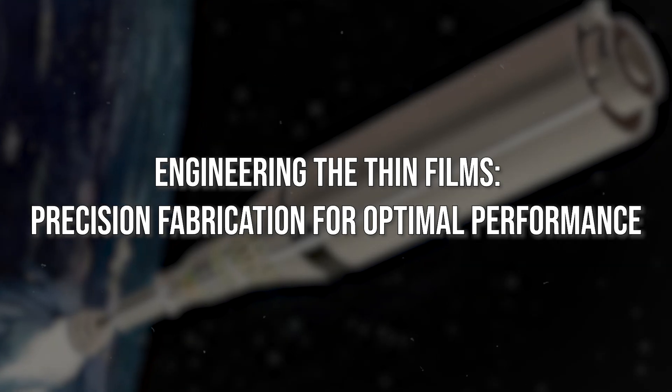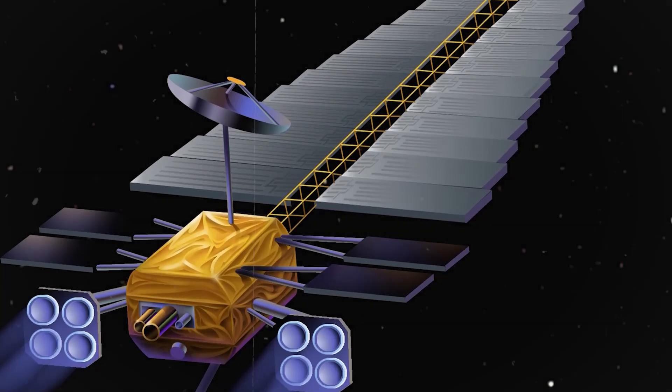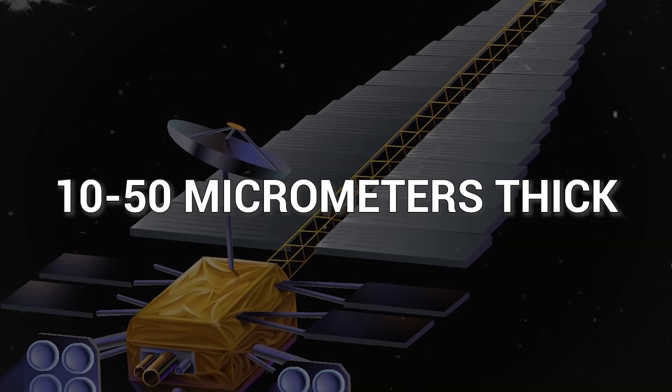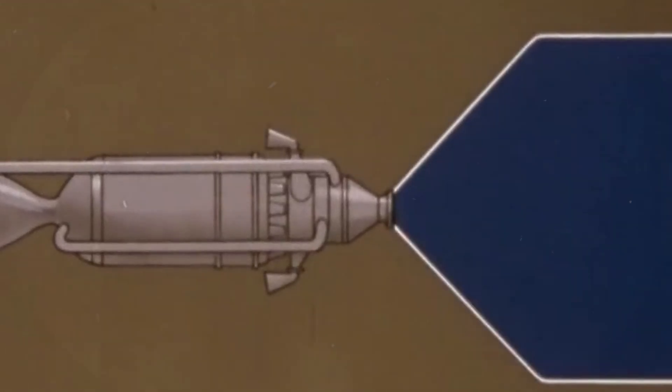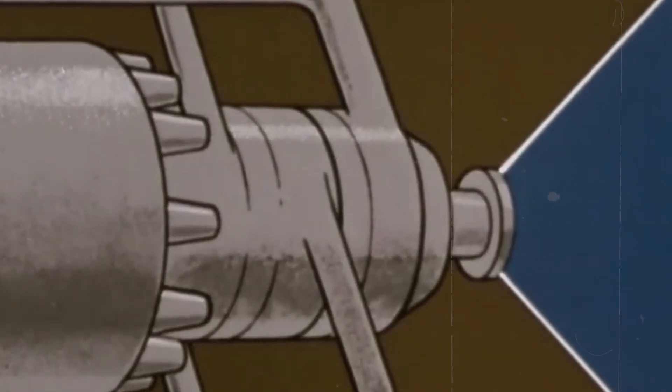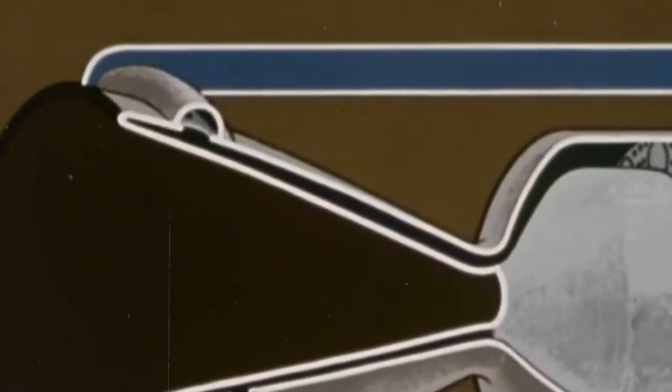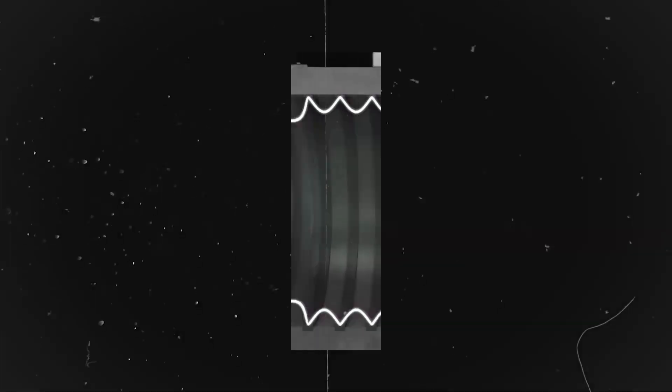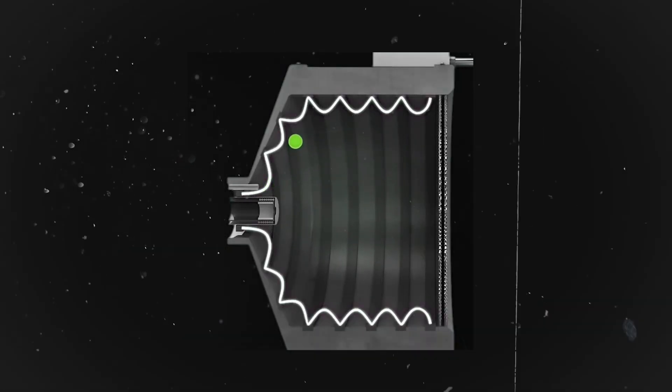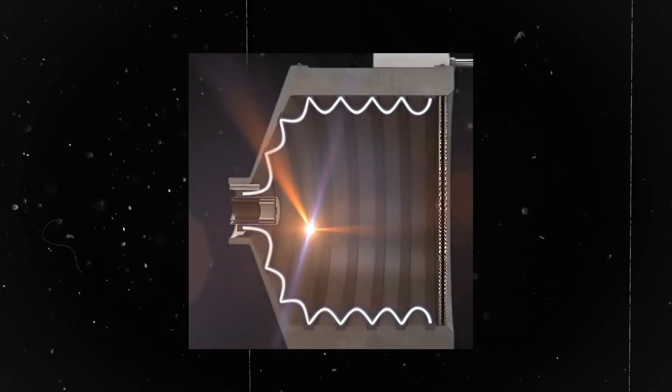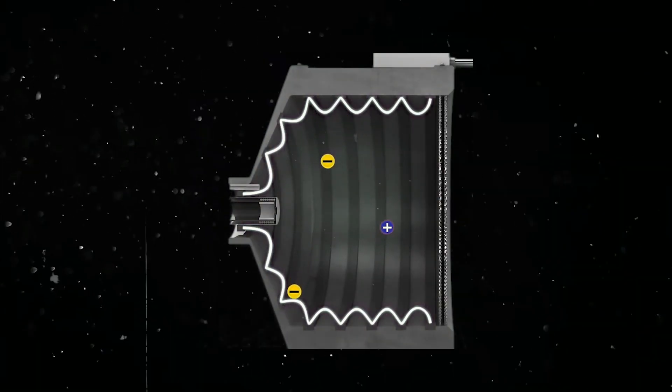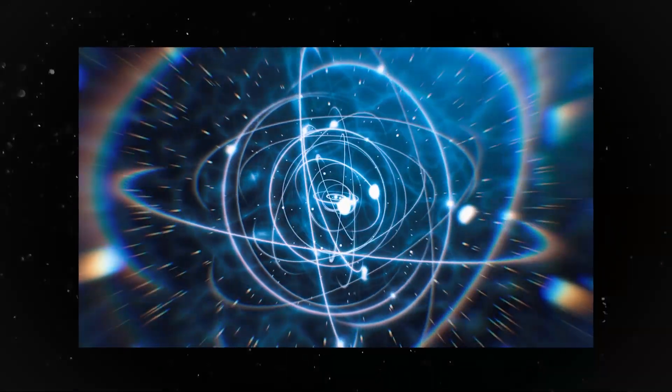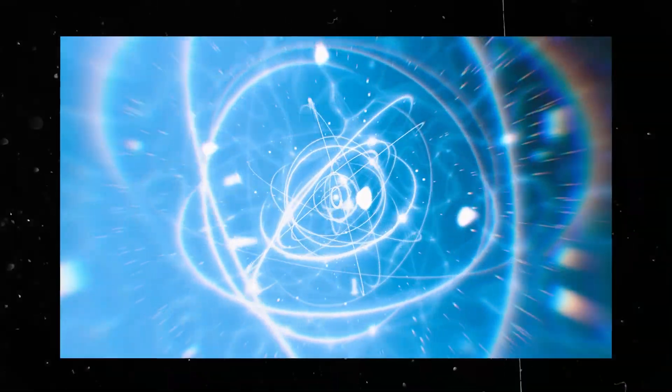Engineering the thin films: precision fabrication for optimal performance. The thin in T-Finer is not an exaggeration. Each fuel layer is only 10 to 50 micrometers thick, or about the width of a human hair. These films are precisely produced utilizing processes such as physical vapor deposition to ensure the radioisotope's uniform distribution. The thickness is critical for balancing efficient alpha particle emission and structural stability. Coating one side of the film with a specialized absorber material plays a vital role. This layer selectively captures and redirects alpha particles in the desired direction, generating thrust. Optimizing the absorber material and its interaction with the radioisotope is essential for maximizing engine efficiency.